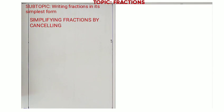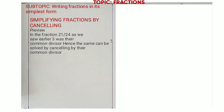Now, we want to look at another method of simplifying. Simplifying by cancelling is a short method of writing fractions in their simplest form. In the fraction 21/24, as we have seen before, 3 is their common divisor. Instead of writing 21/24 and dividing both sides by 3 to get 7/8...